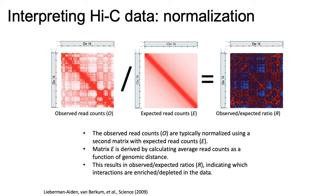You can then take your observed counts, divide by your expected counts, and basically get rid of the large signal on the diagonal — which is signal you already expect and therefore isn't surprising. The goal of Hi-C is to tell you about interactions you didn't expect ahead of time, and that's the purpose of this normalization step.